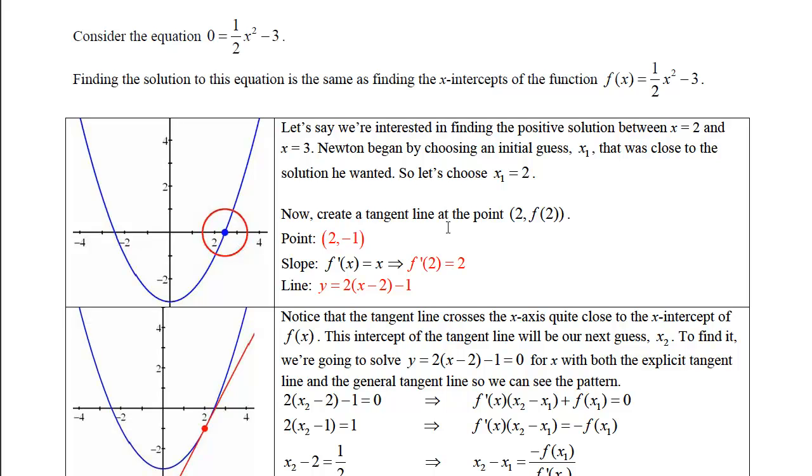Now what we want to do is create a tangent line at the point 2 comma f of 2. So we'll plug 2 into the function, and we will get an output of negative 1. In order to write the tangent line, we need not only the point, but also the slope. So we'll take the derivative of this, which is f prime of x equals x, and then we will evaluate at the point 2, and we'll get a slope of 2.